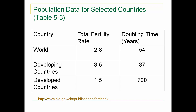Let's look at doubling times. The world's fertility rate is about 2.8, and we're at 7.1 billion. To compute doubling time, you divide 70 by the population growth rate and you'll come up with the doubling time. Developing countries are essentially growing much, much slower, if at all. We're going to come back to that link — I'll show you how to use it for your assignment.